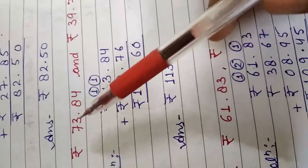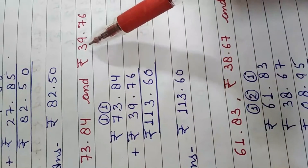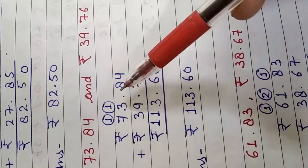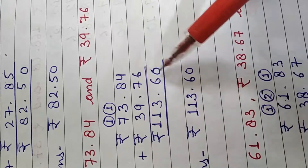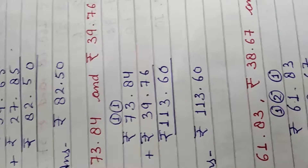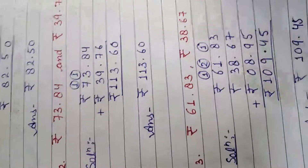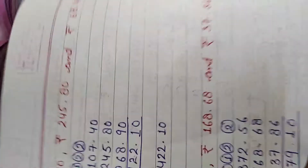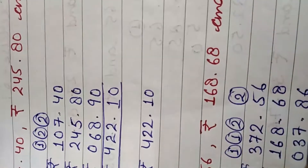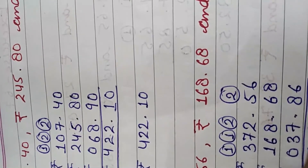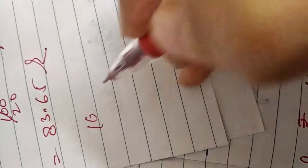Next, question number 2: Add 73.84 and 39.76. Same as before, we put them in columns — point under point, digits under digits. We add them the same way. The answer will come out. The result is Rs. 107.40.